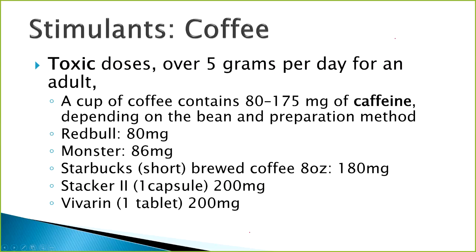Stacker 2 is a common pre-workout supplement that athletes and bodybuilders take. One capsule has 200 milligrams of caffeine, which is the same as one tablet of Vivarin. You can develop a tolerance to caffeine, and you can also develop a sensitivity to caffeine and stimulants. The take-home message is: if someone is taking over-the-counter stuff in addition to illicit drugs in addition to prescription meds, they may be creating a cocktail that is a recipe for a heart attack. We need to encourage them to be aware of what they're putting in their body.